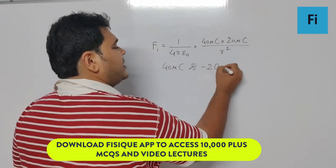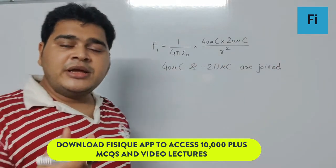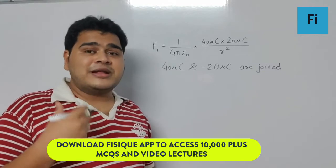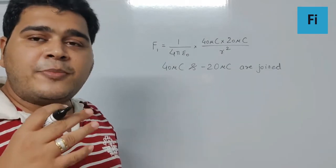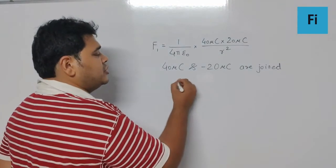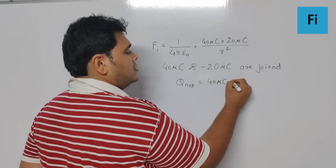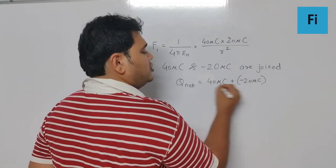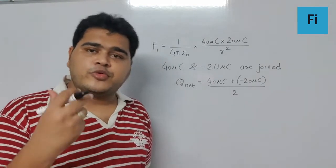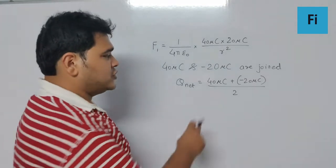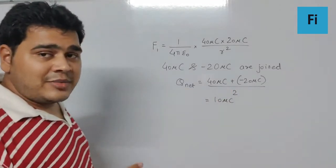When 40 microcoulomb and negative 20 microcoulomb are joined, their charges nullify each other and then get distributed equally in both bodies — only then will the potential be the same. So the net charge left is (40μC + (−20μC)) / 2. So 40 minus 20 is 20, and 20 upon 2 is 10 microcoulomb. This means the new force will be F2.